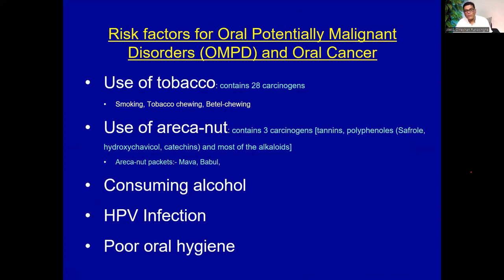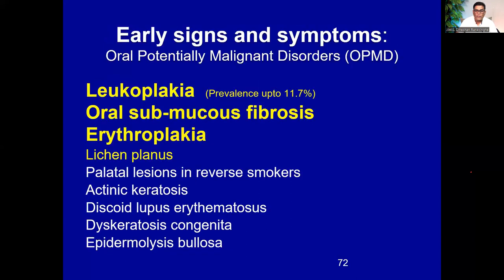What are OPMDs? OPMDs — oral potentially malignant disorders — are the pre-form of oral cancer. If you can diagnose an OPMD before it transforms into a malignancy, you can do a lot. The risk factors are tobacco, areca nut, alcohol, HPV infections particularly in relation to oral sex habits, and poor oral hygiene. HPV infection is now recognized in the West as a risk factor for oral cancers. The main oral potentially malignant disorders we see are leukoplakia, submucous fibrosis, and erythroplakia.